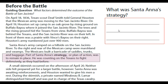Before the battle, guiding question: What factors determined the outcome of the Battle of San Jacinto? On April 18, 1836, Texan scout Deaf Smith reported to General Houston that the Mexican army was moving to the San Jacinto River. On April 19, Houston set up camp in an oak grove by rising ground on Buffalo Bayou where it joined the San Jacinto River. The trees and the rising ground hid the Texans from view. Buffalo Bayou was behind the Texans and the San Jacinto River was on their left. In front of them was a prairie with Vince's Bayou on their right. Houston's army numbered just over 900 men. Santa Ana's army camped on a hillside on the San Jacinto River. To the right and rear of the Mexican camp were marshland and swamps. The Mexicans built a barricade of saddles, trunks, and baggage.